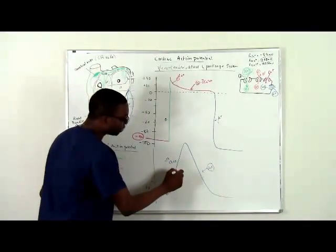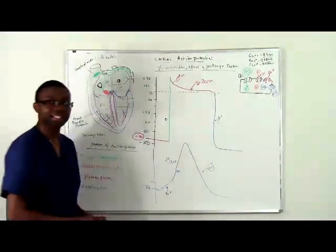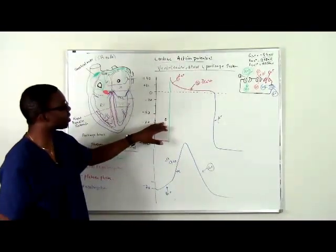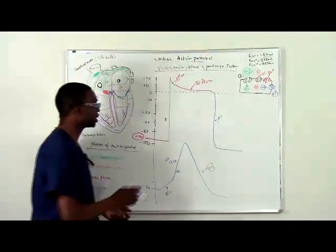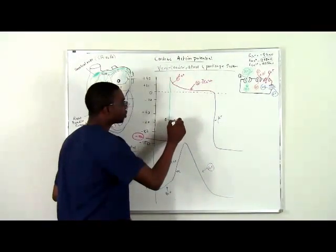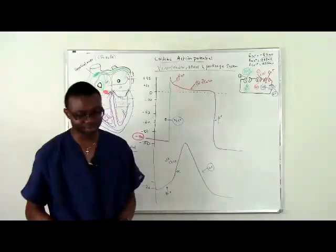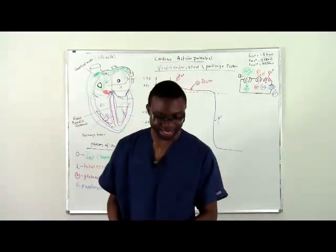Compare this to the depolarization of the ventricles and atrium, which requires sodium. That is the big difference. That is why the intrinsic rate of phase four depolarization is important.